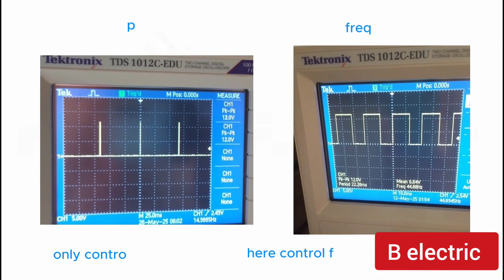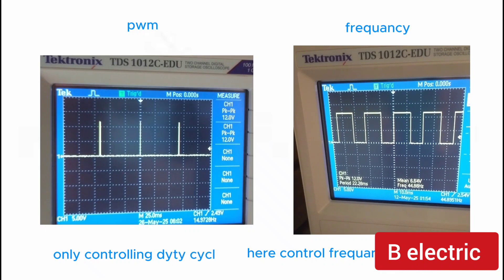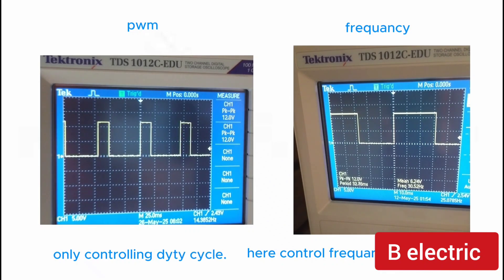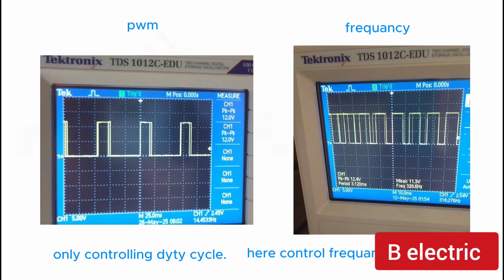The duty cycle and frequency of a PWM signal are often confused. So we put two oscilloscope videos that show the difference between them.